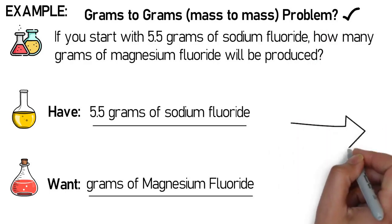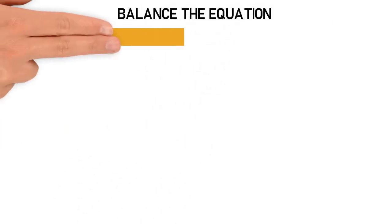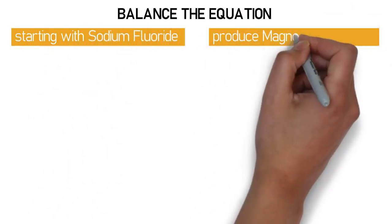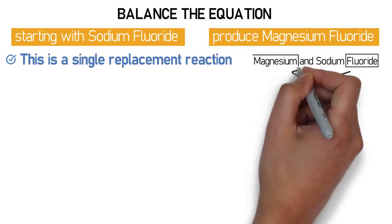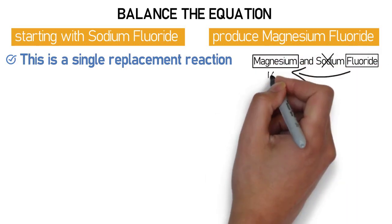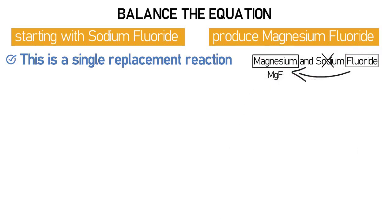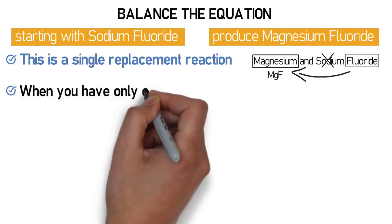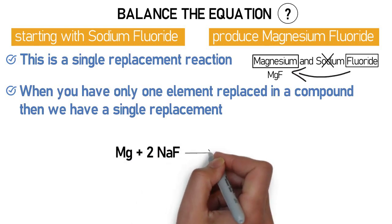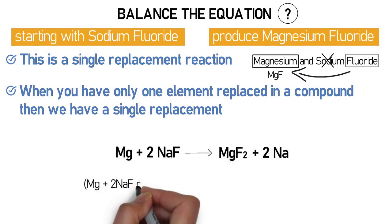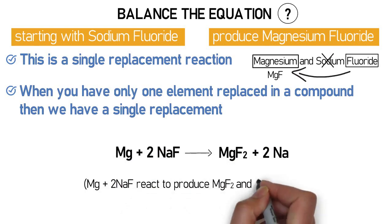Now that we know we are doing mass-to-mass stoichiometry, we go to step one: balance the equation. We know we are starting with sodium fluoride and producing magnesium fluoride. This is a single replacement reaction — magnesium and sodium fluoride react, fluoride leaves sodium to bond with magnesium, and sodium is left out. When only one element is replaced in a compound, we have a single replacement. The balanced equation is: magnesium plus two sodium fluorides react to produce magnesium fluoride two and two sodiums.